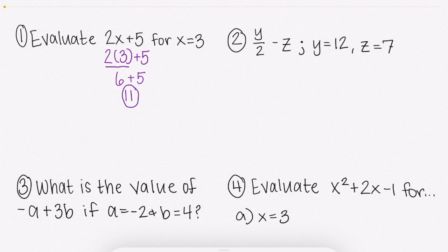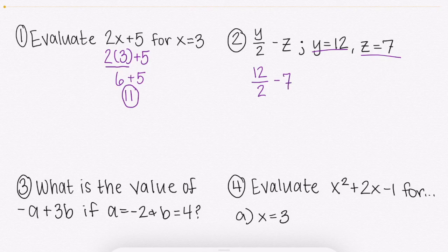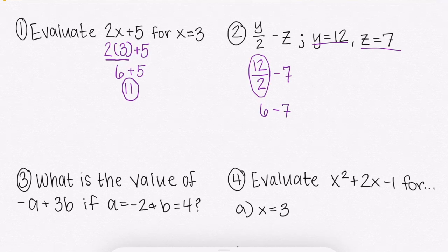Moving on to number 2. You can see this time I have two variables. I have y and I also have z, but that's okay because they tell us y equals 12 and z equals 7. So we're going to just plug in. Instead of y, I'm going to have 12 over 2 minus, and instead of z, I'm going to have 7. So again, order of operations. We're going to start with divide, which we should know a fraction bar really just means divide, which 12 divided by 2 would get us 6 minus the 7. So 6 minus 7 would get us negative 1. So our solution for number 2 is negative 1.